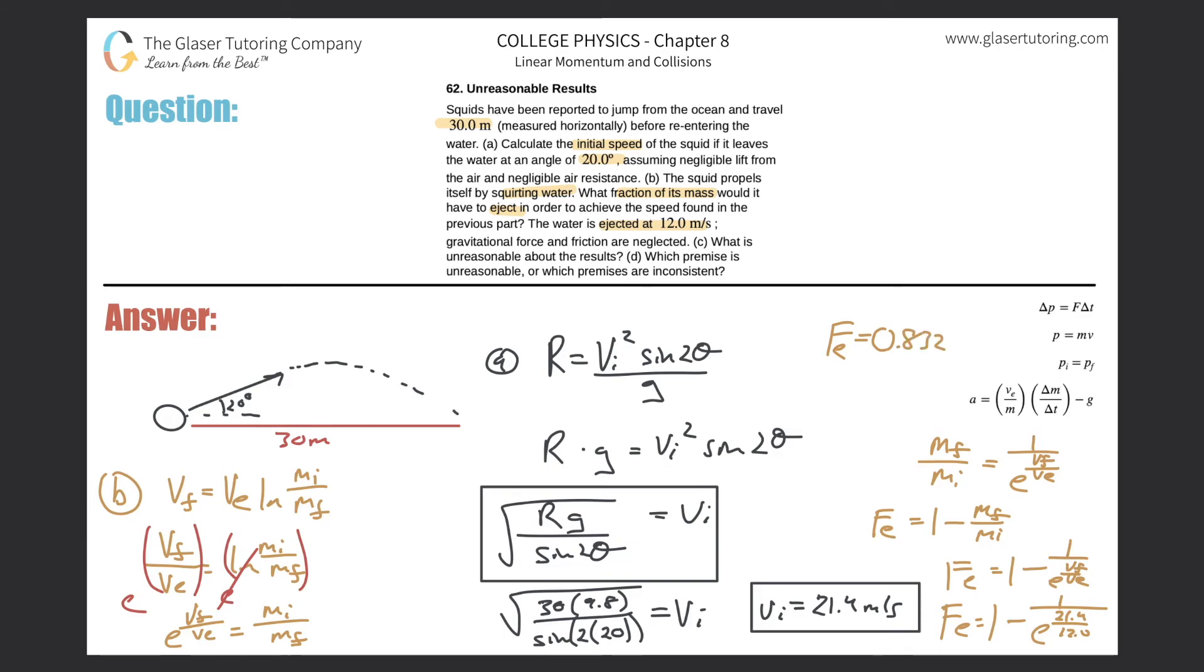It says what is unreasonable about this result? That would be a very large percentage of the mass of the squid to be ejected, that's why it's called unreasonable results, just way too much. That's letter C. And then letter D, what premise is unreasonable? They probably don't jump 30 meters.